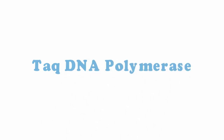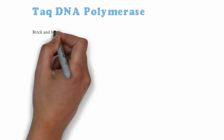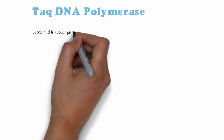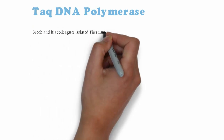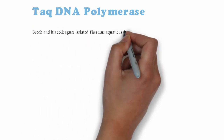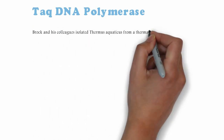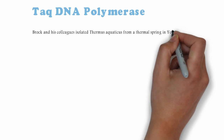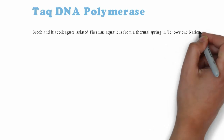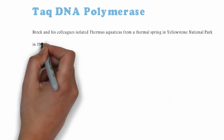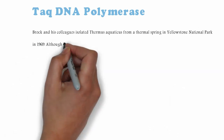Taq DNA Polymerase. Broek and his colleagues isolated Thermus aquaticus from a thermal spring in Yellowstone National Park in 1969.